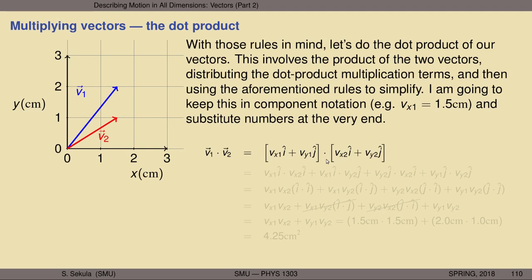The dot product can be distributed, just like multiplying two polynomials. I distribute vx1 i-hat dotted component by component with v2, giving terms: vx1 i-hat dot vx2 i-hat, plus vx1 i-hat dot vy2 j-hat, and similarly distributing vy1 j-hat across v2's components. This yields a relatively unpleasant-looking equation with four terms, but wait — some shuffling of numbers and vectors will grossly simplify what just happened.